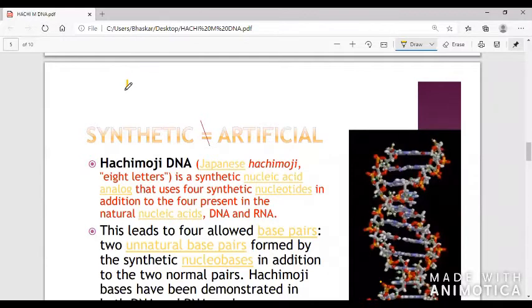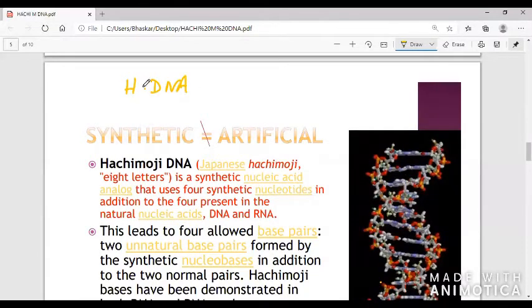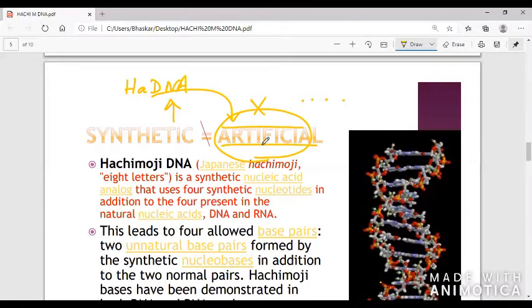Furthermore, the term synthetic and artificial is not the same. If I say Hachimoji DNA is artificial DNA, that is wrong. It is synthetic. Artificial means if we are using some molecules, models, or circuits to create the DNA molecule, then we can call them artificial DNA, meaning that is an artificial system or network that can function as DNA. But Hachimoji DNA is synthetic DNA, meaning it is made up of molecules and is a polymer very similar to DNA but doesn't occur naturally.